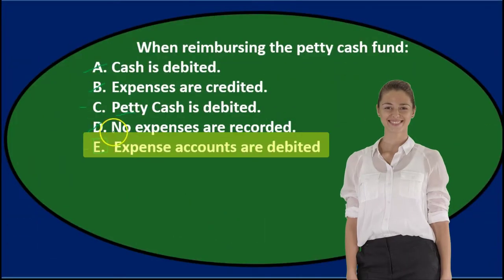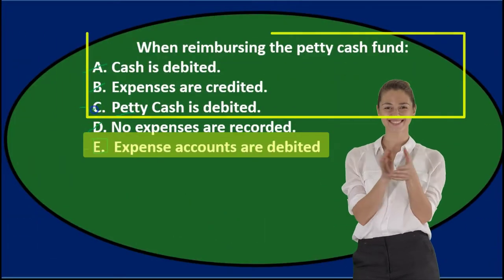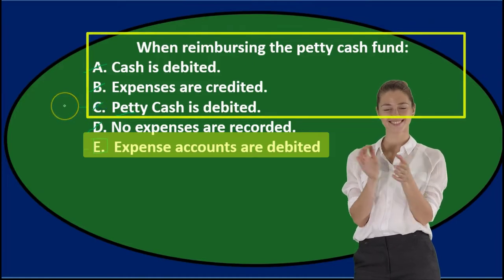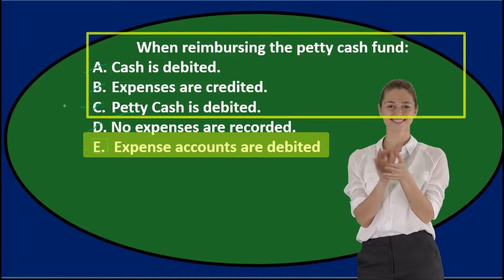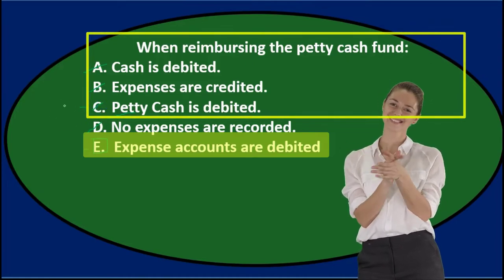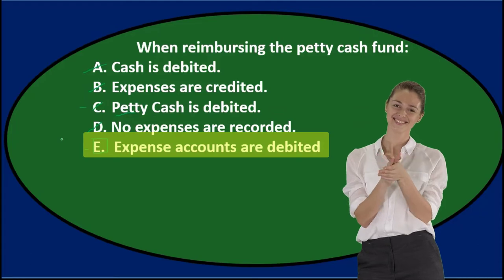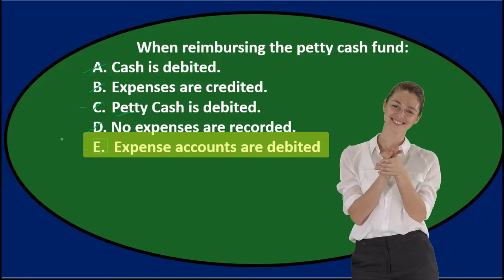So E is the correct answer, not C. When reimbursing the petty cash fund, E — expense accounts are debited.